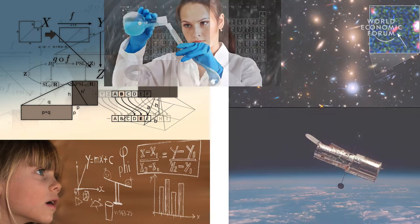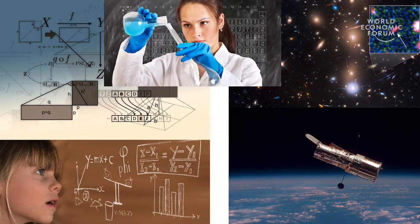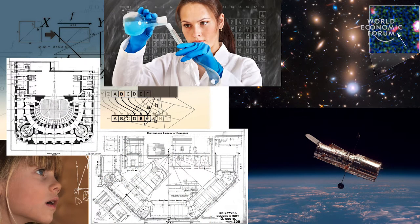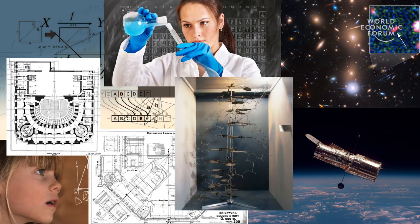Real intelligence goes beyond pattern recognition to modeling the world, explaining and understanding what we see, imagining things we could see but haven't yet, making plans and solving problems to make those things real, and then building new models as we learn more about the world. The goal of my work is to reverse engineer these human abilities, to write down their equations, and then to use that to make more human-like AI.